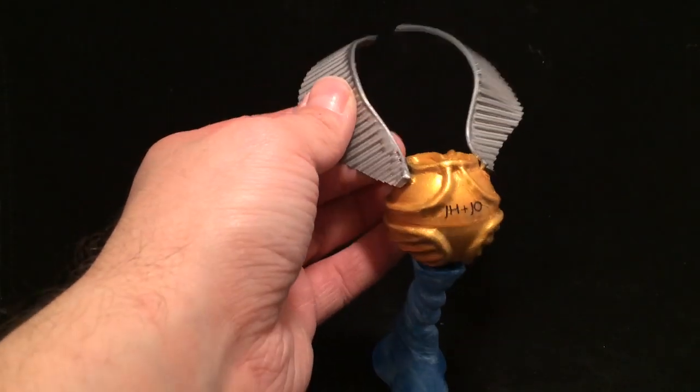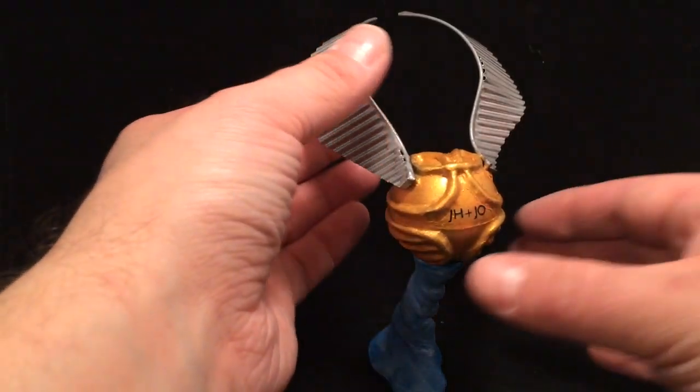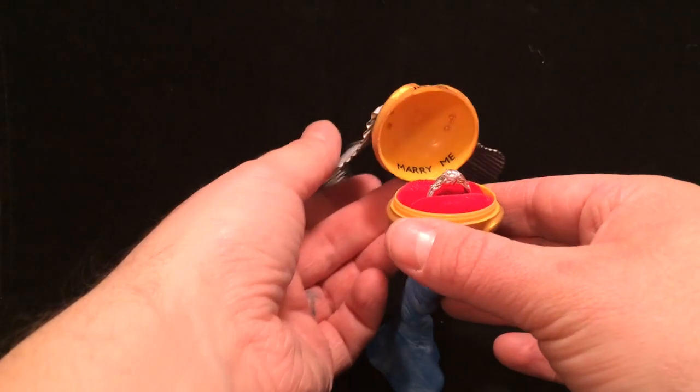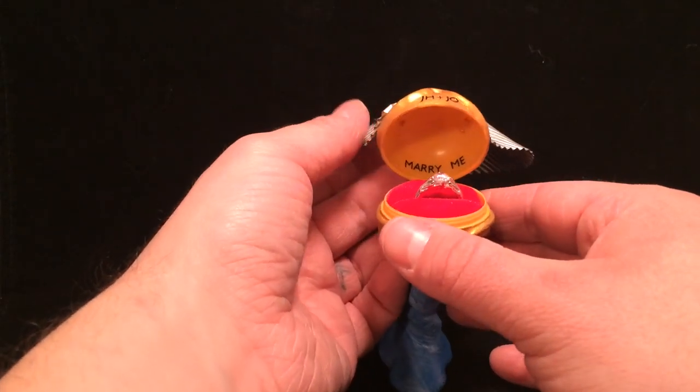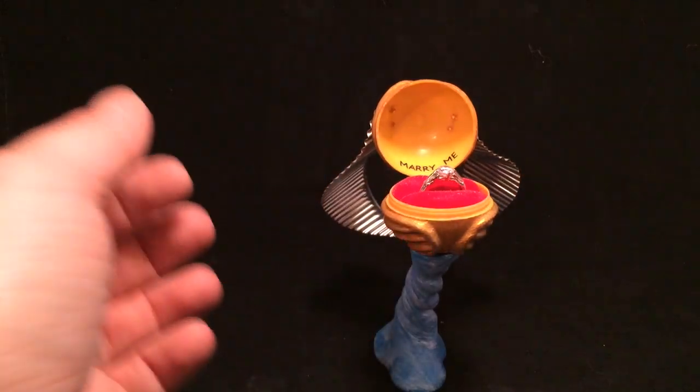The ring box opens up and is hinged, so if we go in here and open it up you can see it hinges open on a hinge that's hidden on the back there, and it says marry me on the inside.